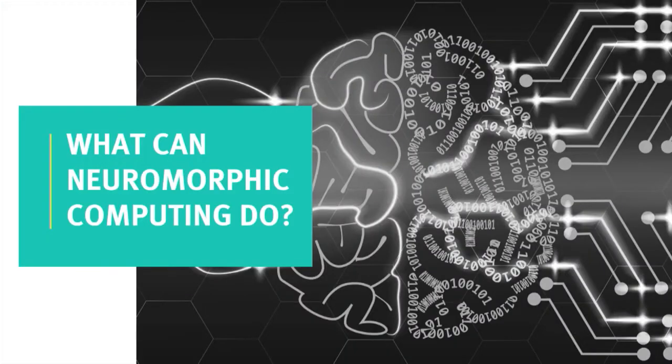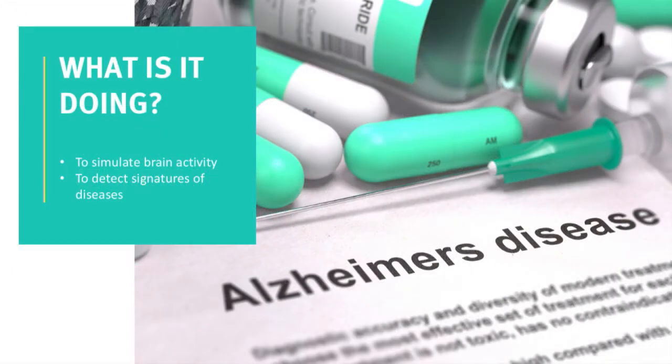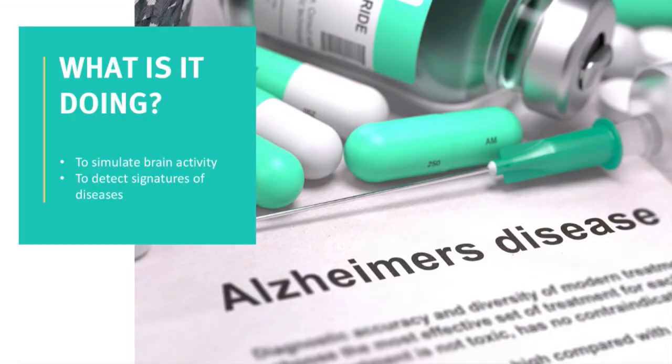With that, I'd like to come to the applications of neuromorphic computing. The most straightforward application is to simulate brain activity, which we are already doing today. The hardware we have doesn't allow us to simulate an entire brain, but it allows us to simulate part of it, and that actually allows us to better understand the brain and feed this back into building better neuromorphic hardware.